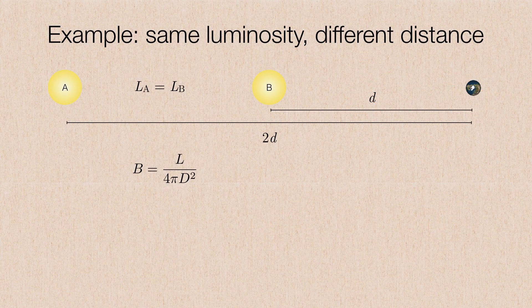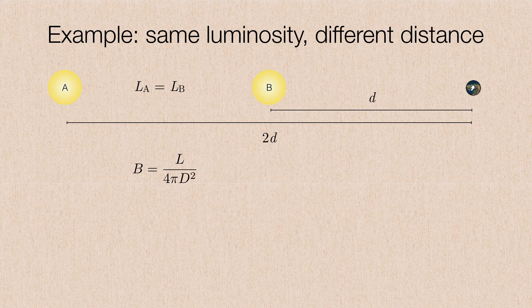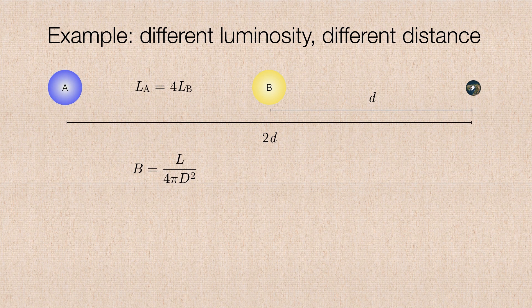So in this example, we have two stars, both have the same luminosity, but star A is twice the distance of star B. Therefore, the brightness of A is going to be about one-quarter the brightness of B. But if we could increase the luminosity of star A by a factor of four, then that factor of four increase in luminosity cancels out the factor of four decrease in brightness, and so now the two stars appear equally as bright.